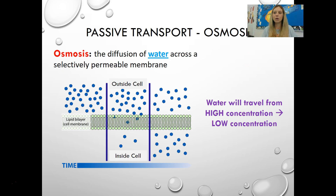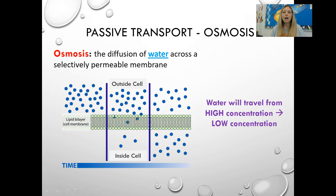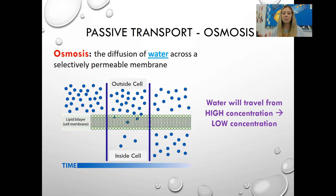Then we have osmosis, which is just a specific type of diffusion. Osmosis is the diffusion of water across a semi-permeable membrane. It's still diffusion — still going from high concentration to low concentration and does not require energy. The diffusion of water is so important that we give it its own name: osmosis. Water molecules would diffuse across the cell membrane until reaching a state of equilibrium, traveling from high to low, with no energy needed.